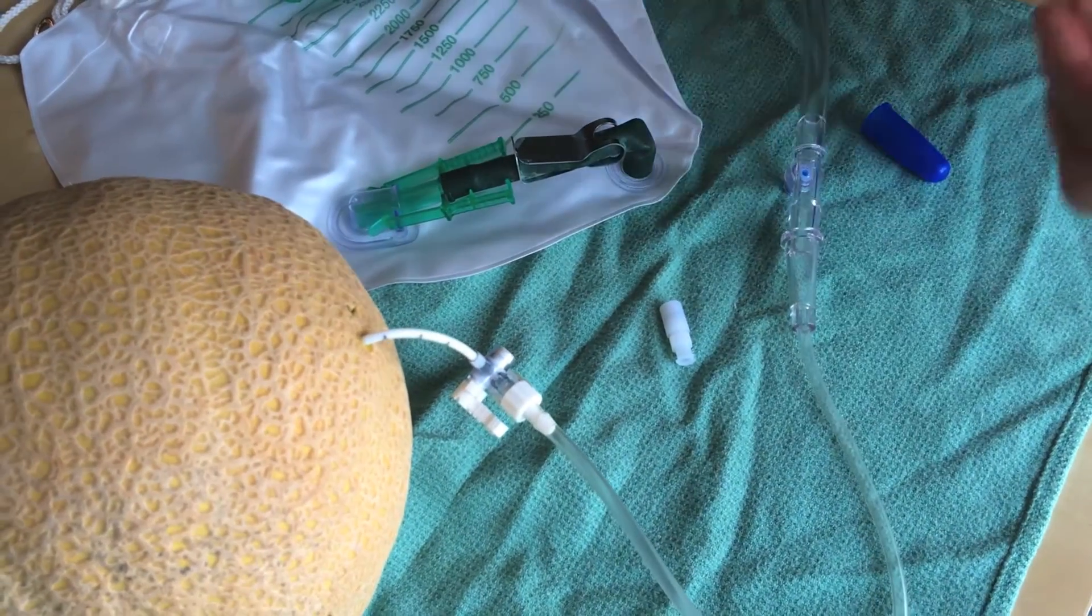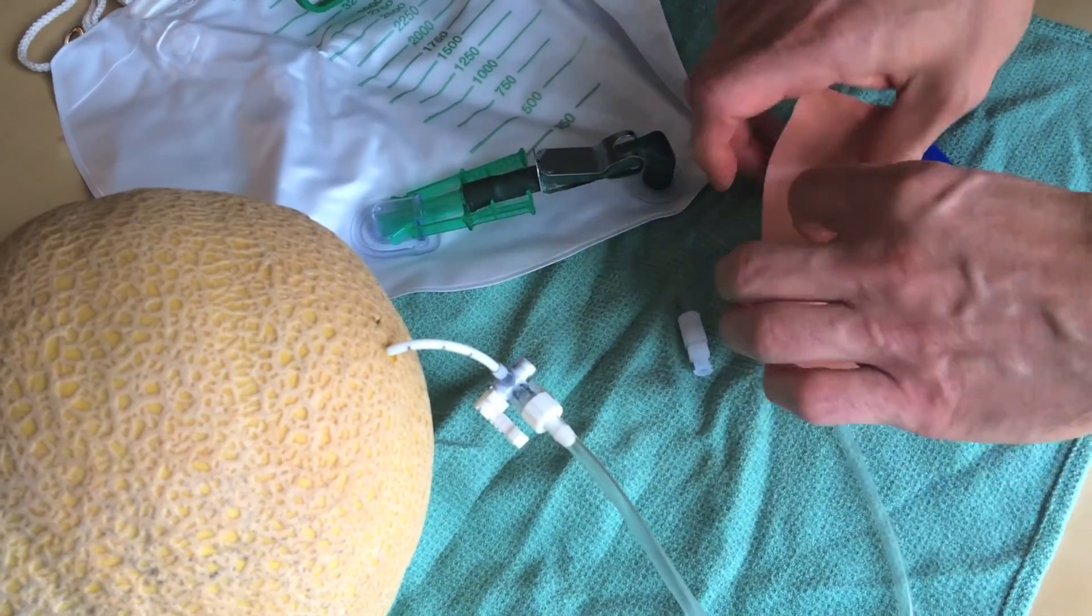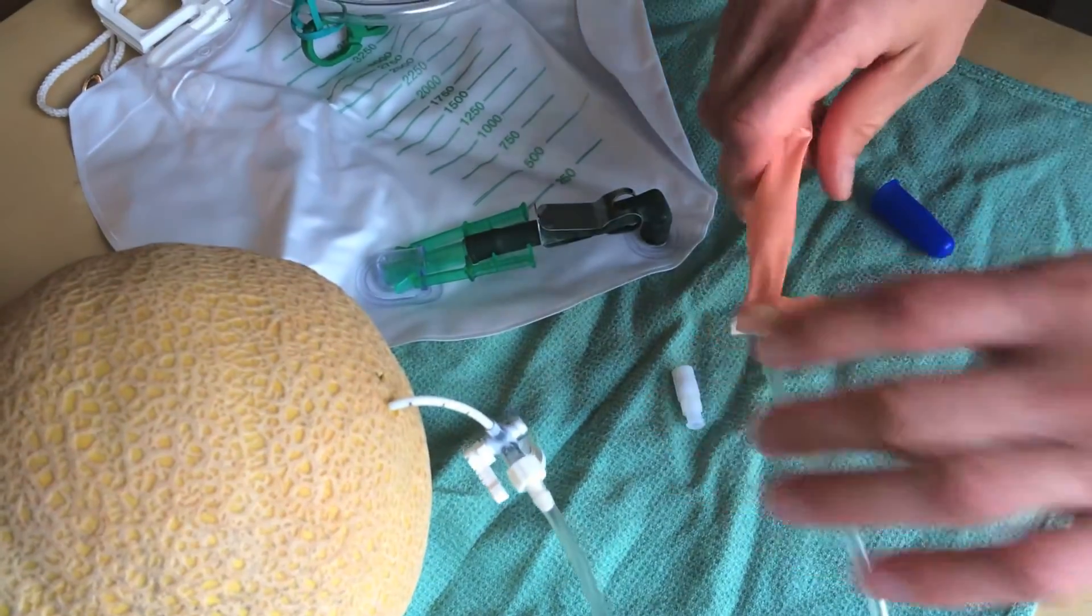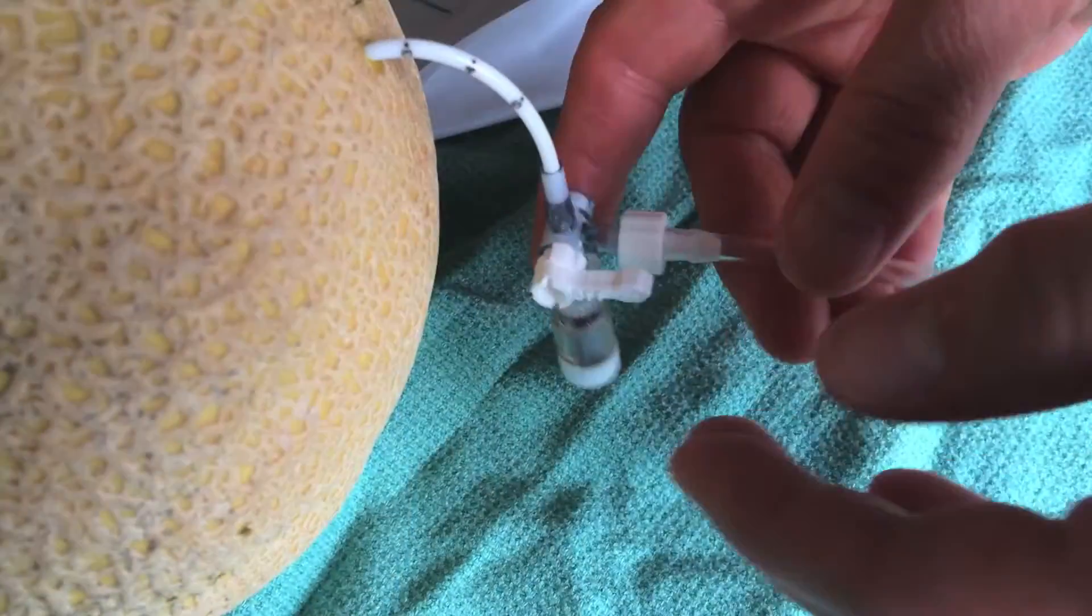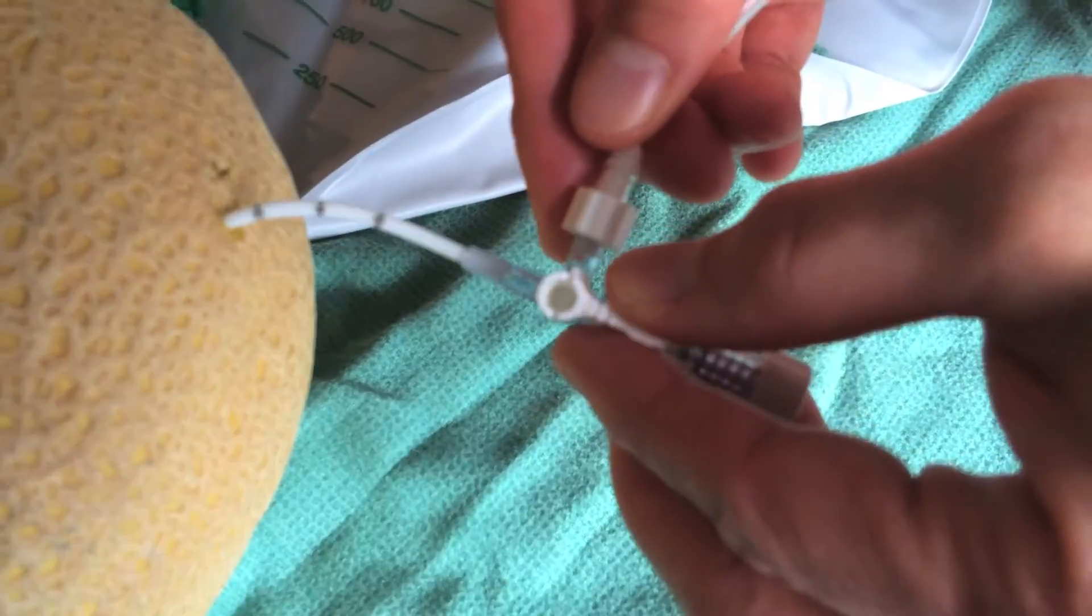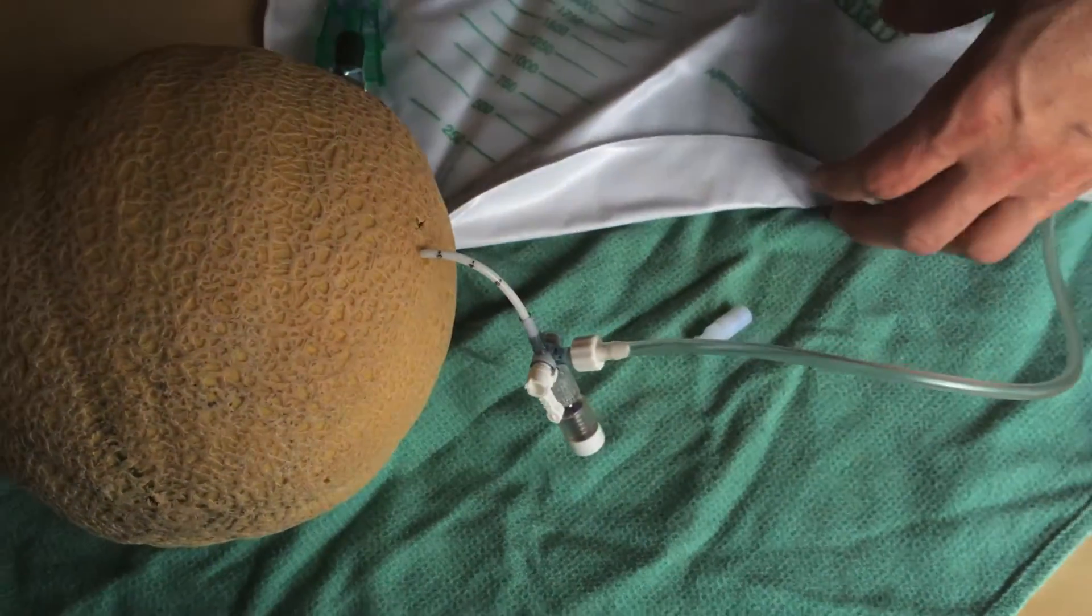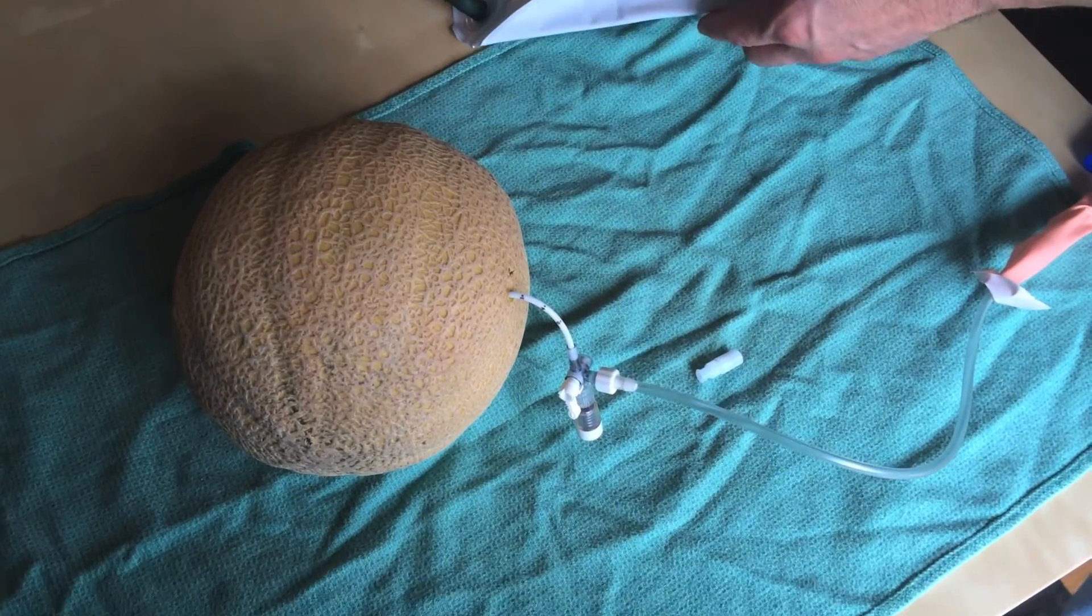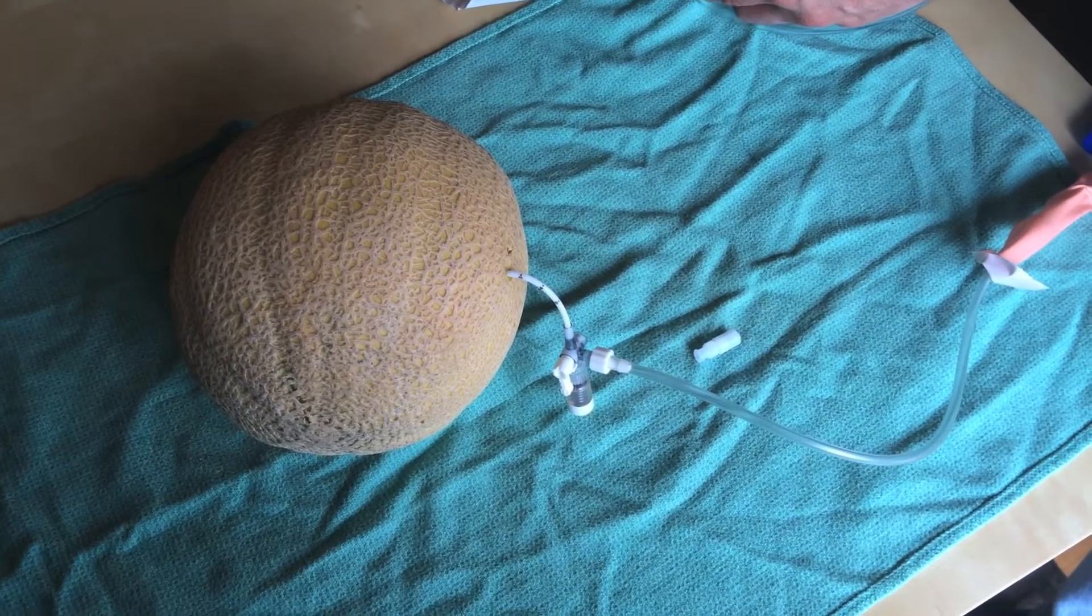You can secure this connection with a piece of pink tape. The next step is to turn the stopcock to the open position and place the bag on the floor to allow gravity drainage. It can accommodate up to four liters.